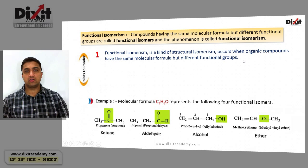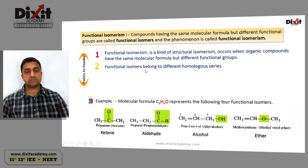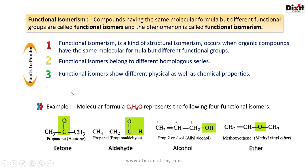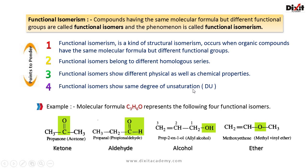Characteristics of functional isomers: functional isomers belong to different homologous series; they show different physical as well as chemical properties; and they show the same degree of unsaturation. For example, the molecular formula C3H6O represents four functional isomers.